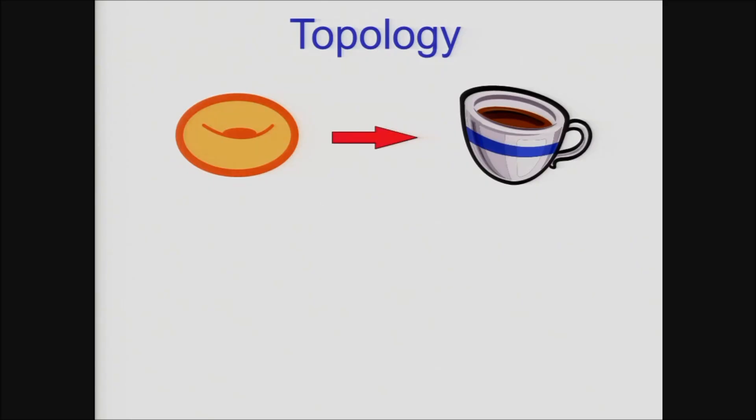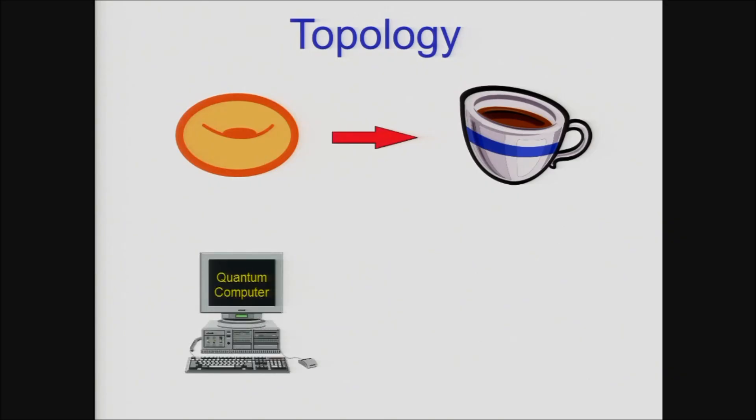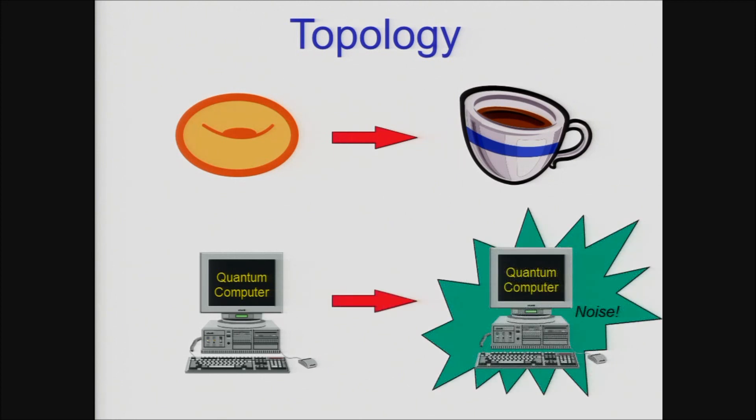Topology is relevant to quantum computation because we would like the way a quantum computer processes its protected information to remain invariant if we deform the quantum computer by introducing some noise or error.